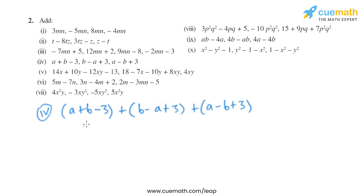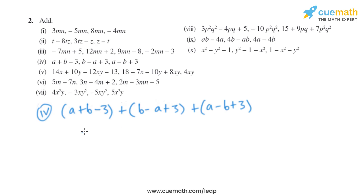The expressions given in part 4 are a plus b minus 3, b minus a plus 3, and a minus b plus 3. The terms with a, the terms with b, and the constant terms are the like terms. So a minus a plus a leaves just a.